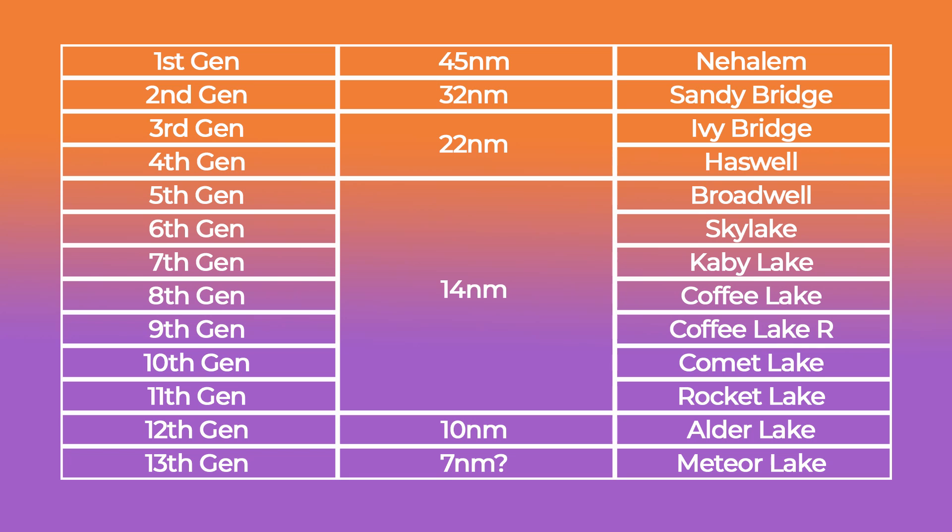Moving on to Haswell, or fourth generation Intel — Haswell was on the 22nm process node and had two segments within it. There were regular Haswell chips and then Devil's Canyon chips, where all Devil's Canyon chips had a 9 in the third digit of the CPU name. Both are still under the Haswell microarchitecture and both are fourth gen Intel.